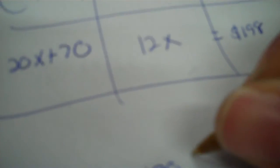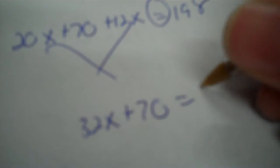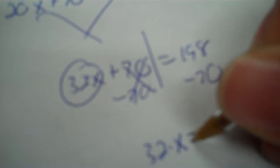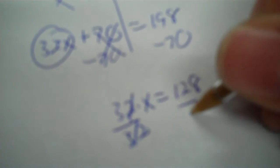So write out your equation. Now you solve it. Remember, you only need one equation to solve the problem. Add those. It's 32X plus the 70 equals the 198. Take out your plus 70 by minus 70. It's 128. Then you divide each side by 32. 128 divided by 32 is 4.